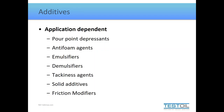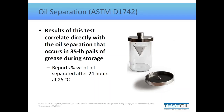The oil separation test places grease in a mesh basket and measures by percent weight how much oil separates from the original grease after 24 hours in a 25-degree Celsius environment. This correlates directly with how much oil will separate in 35-pound pails of grease, making it useful for storage and shelf life concerns. These performance tests are for new grease selection and are typically reported on product data sheets, not on used or in-service greases.